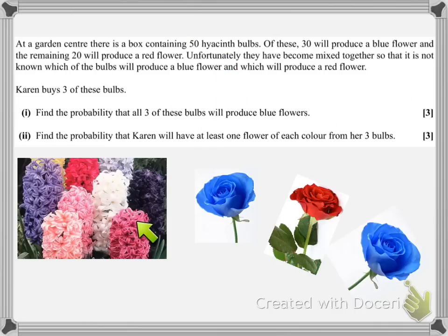It turns out they look like this, but I'm just going to picture blue and red flowers. So in this question we've got 30 bulbs which will produce a blue flower and 20 which will produce a red flower. And they've been mixed together, so it's not known which of the bulbs will produce a blue flower and which will produce a red flower.